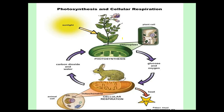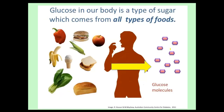That cycle of photosynthesis and cellular respiration is one of the most important cycles on Earth. Glucose in our body is a type of sugar from all types of foods — it's the basic energy molecule. When you eat food, it goes through your digestive system, breaks down into molecular structures, travels through your bloodstream to your cells, and your cells do cellular respiration in the mitochondria to give you energy. That's why we need to eat food.